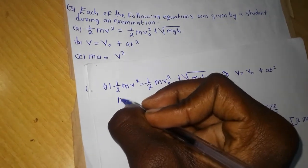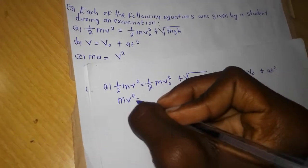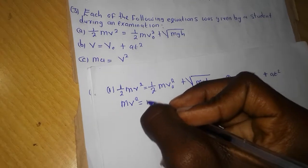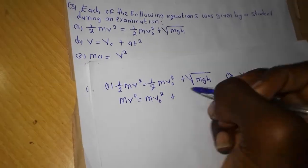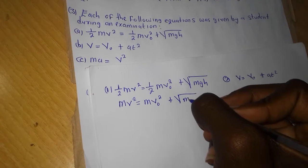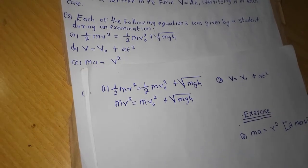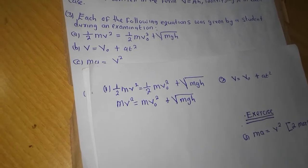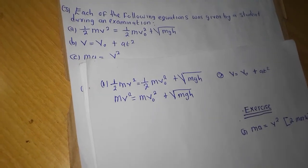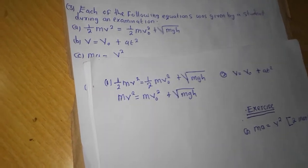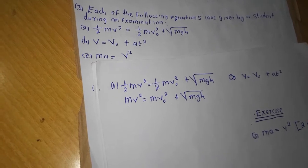So in this case, we are going to say MV² equals MV₀² plus MGH. Your main target here is simply to ensure that what is on this side and what is on this side are equal.